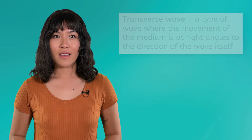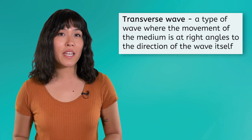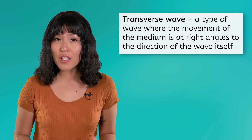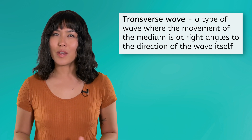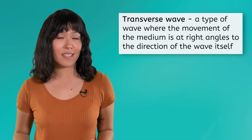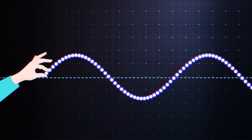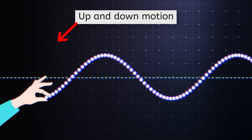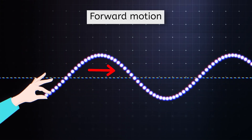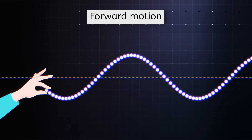Now that we know what a medium is, we can define a transverse wave. A transverse wave is a type of wave where the movement of the medium is at right angles to the direction of the wave itself. In this case, we can think of a right angle as being opposite. In the case of our water waves, we said that the wave appeared to be moving forward, while the water itself moved up and down. Back and forth motion is the opposite of up and down motion, and we see both types of motion in a transverse wave. Notice how the wave is generated with an up and down motion on the rope, while the wave itself travels forward. This is the defining characteristic of a transverse wave.